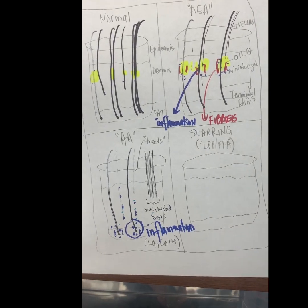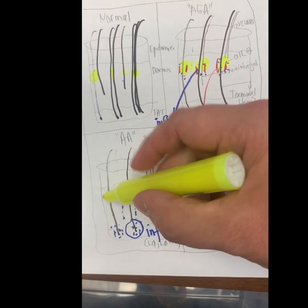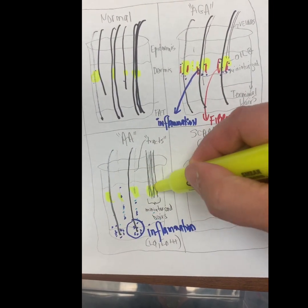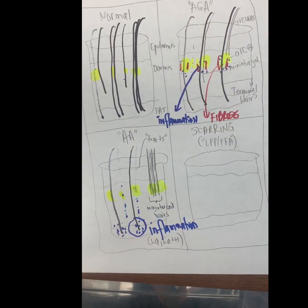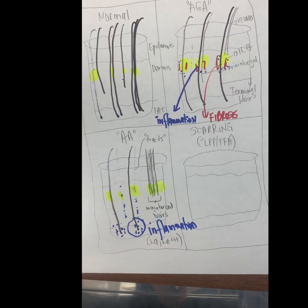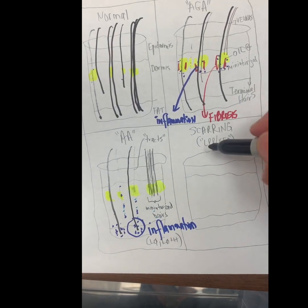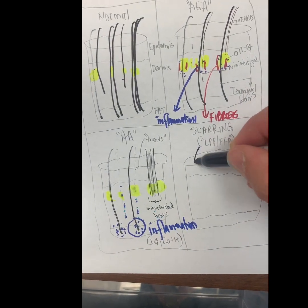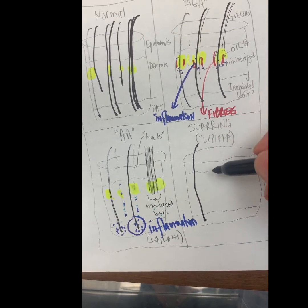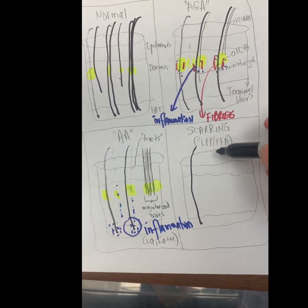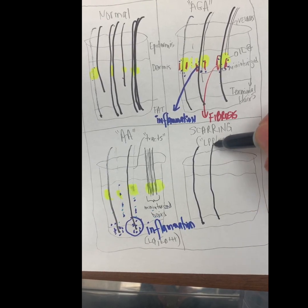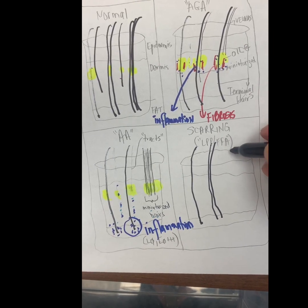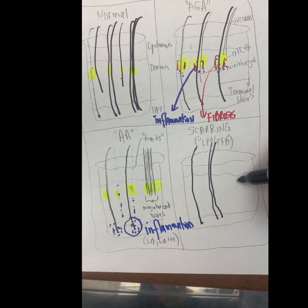In alopecia areata, the sebaceous glands are still present — drawn here in yellow — because this is a non-scarring alopecia. In scarring alopecia, we may see terminal hairs if it's not too far advanced, but we don't see the bundles of two and three that we saw in the normal scalp diagram, as those are destroyed by the inflammatory process.